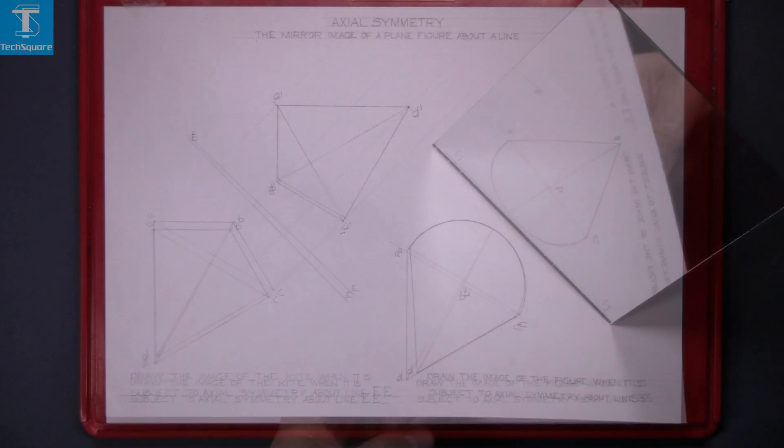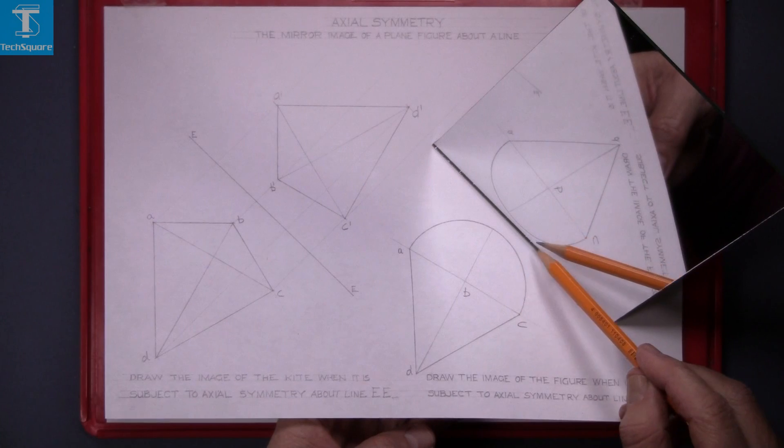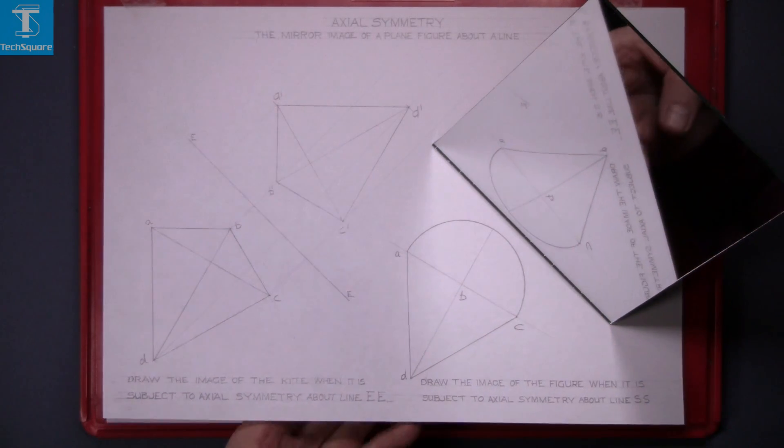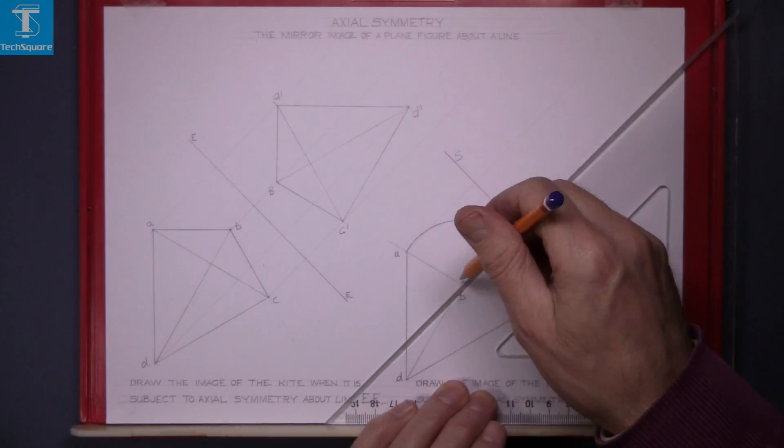Now looking at the mirror, that's what the image will look like. Project each point at 90 degrees to the line as we've done before. So bringing each point up at 90 degrees to the line.